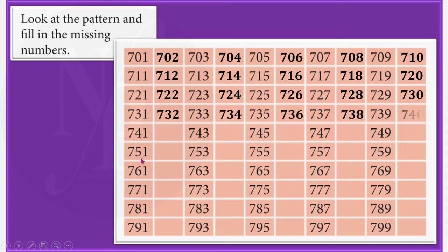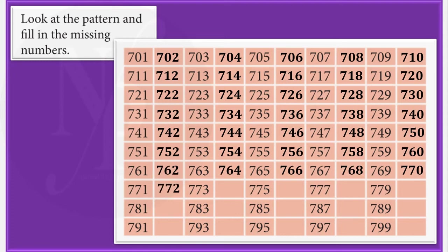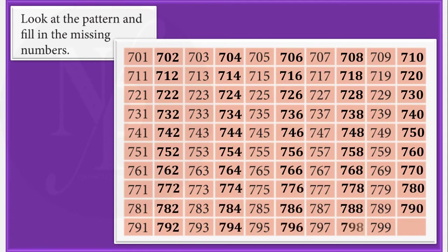As I am showing here, you also should write all these numbers. In the last row, the numbers start from 791 and we will end with 800. So in this number grid, we have the numbers from 701 to 800. You also write all the numbers.